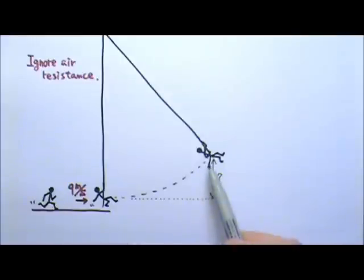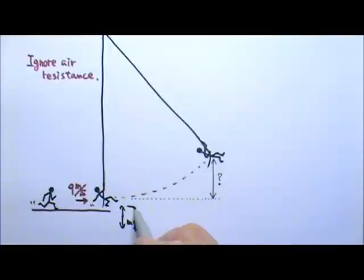This problem will not be easy to solve if we just want to use forces and kinematics. If we draw the force diagram of Tarzan during the swing, over here you have mg and the tension from the vine. When he swings to here, it will be mg going down and tension from the vine will go slanted.